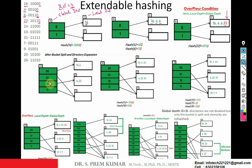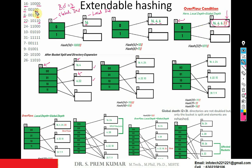The directory now has four entries: 00, 01, 10, and 11. The global depth got increased by one — it became two. The bucket which got split also had its local depth increased by one, so its local depth is now two. The values are to be rehashed with the last two significant bits. For 16, the last two significant bits are 00, so 16 is placed in the 00 bucket. For 4, the last two significant bits are also 00, so 4 is placed in 00.